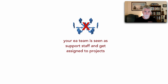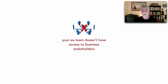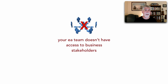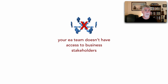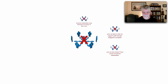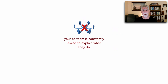The third warning sign is that your enterprise architecture team doesn't have access to business stakeholders. One of the first questions I ask in any enterprise architecture effort is whether I have access to the right key stakeholders. Many organizations put walls or roadblocks against who enterprise architects can and can't talk to — that's a warning sign the effort won't work out well.